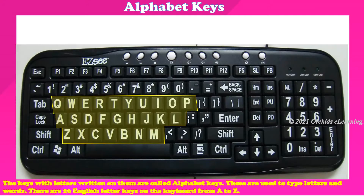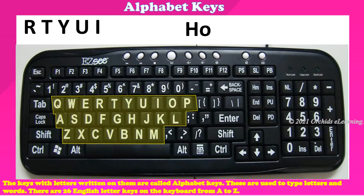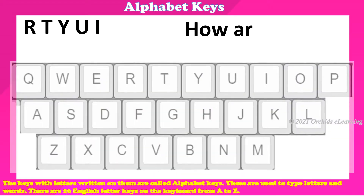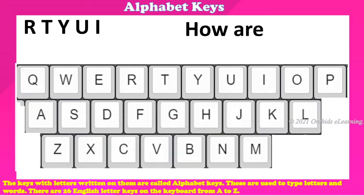Alphabet keys: the keys with letters written on them are called alphabet keys. These are used to type letters and words. There are 26 English letter keys on the keyboard, from A to Z.